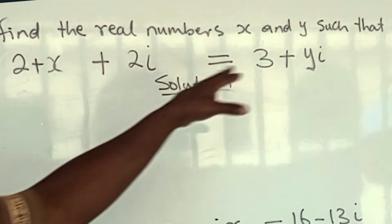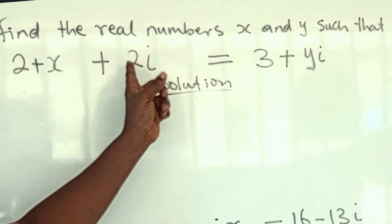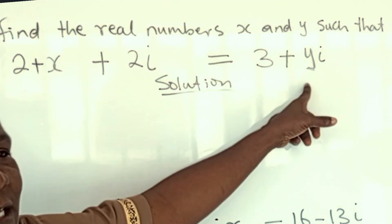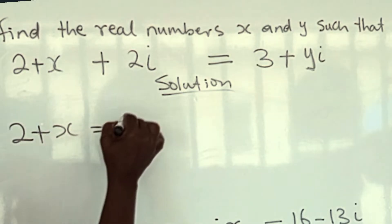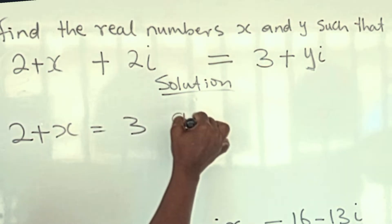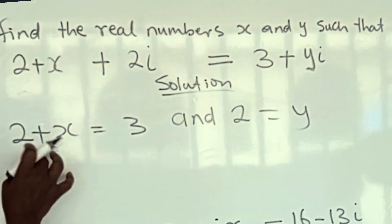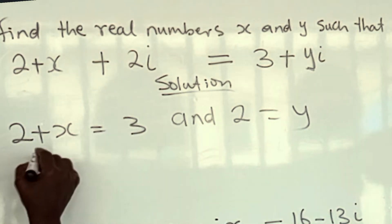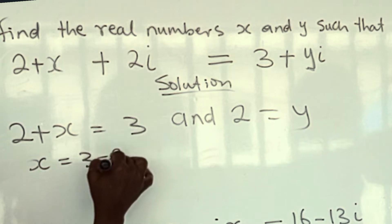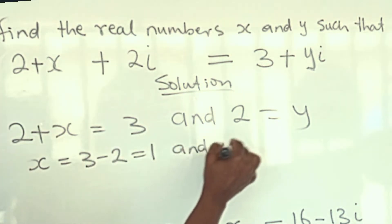Since this is equal to this, we have that the real part must be equal to the real part and the imaginary part must be equal to the imaginary part. So 2 plus x is equal to 3, and 2 is equal to y. So 2 plus x equals 3 implies that x is equal to 3 minus 2, that is 1.